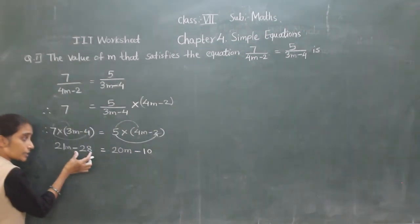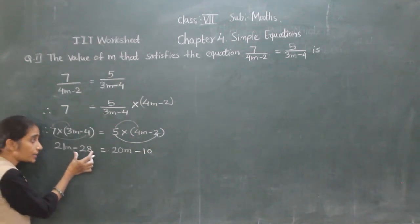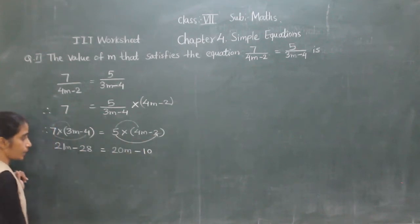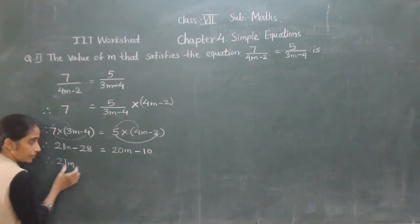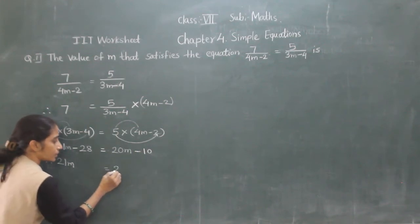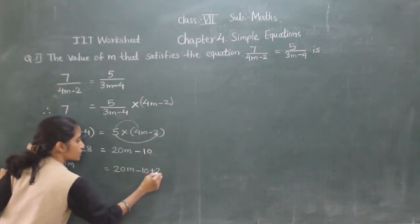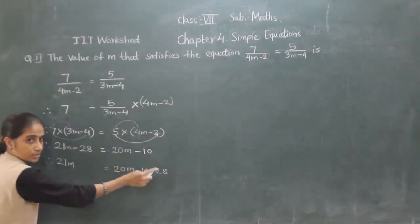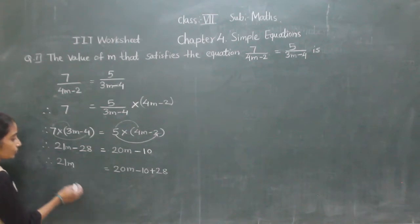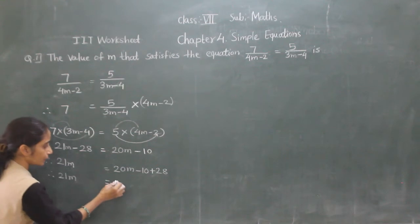Now see what we will do. We have minus 28 here. If we transfer minus 28 to the right hand side, then it will become plus. So 20n minus 10 plus 10, plus 28. Now 21n is equal to 30n — now which numbers we are going to separate out.